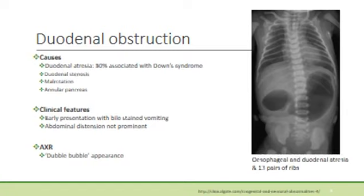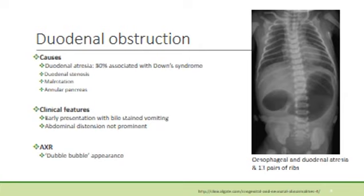An infant with duodenal obstruction usually presents quite early. The causes are duodenal atresia, duodenal stenosis, duodenal web, malrotation or an annular pancreas, which can cause extrinsic obstruction. It is important to examine the baby for related conditions such as Down syndrome, which is quite common in babies with duodenal atresia. Babies may present early with bile-stained vomiting. Abdominal distension is not a prominent feature, and on the abdominal x-ray you can appreciate a double bubble appearance, indicating a dilated stomach and dilated first part of the duodenum.